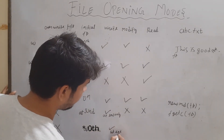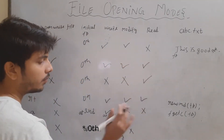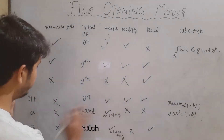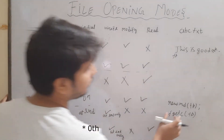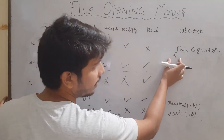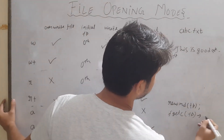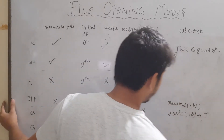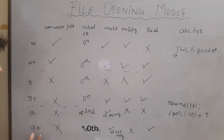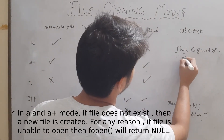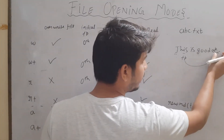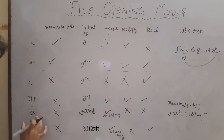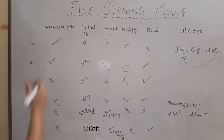Finally we have 'a+' mode, which is similar to 'a' mode. Write is allowed at the end only, and modify is not allowed, but reading operation is allowed. If I do rewind(fp) and then fgetc(fp), it will return the character 't'. Note that in both append and 'a+' mode, whenever you try to write, fp jumps to the end of the file — this does not happen in any other mode.